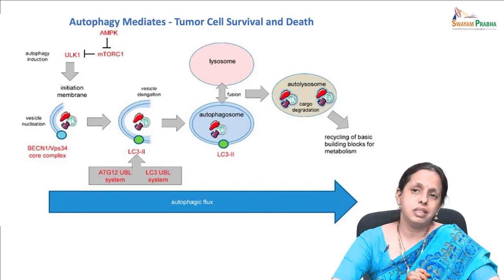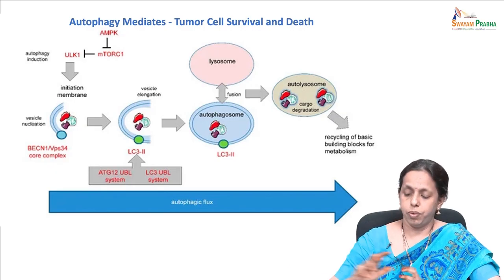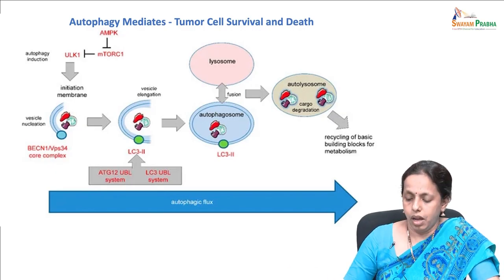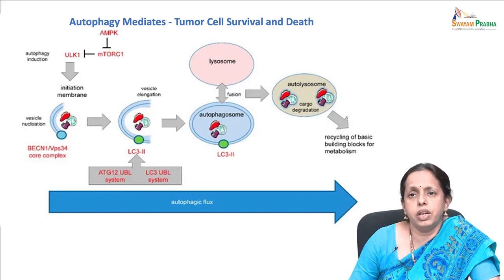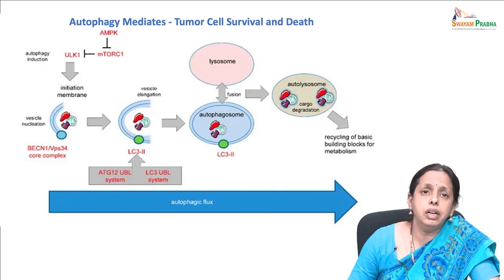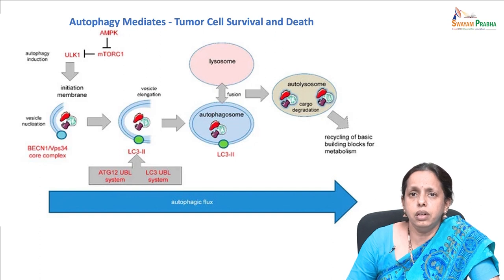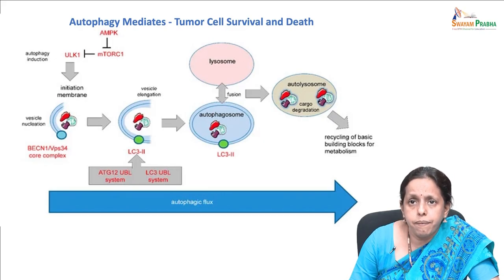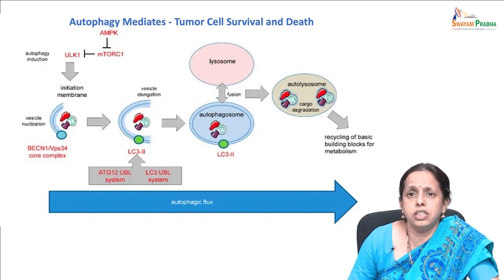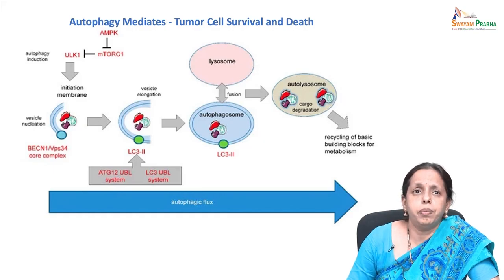Autophagy is a multi-step process involving several ATG proteins and signaling complexes. It requires the formation of a double membrane autophagosome that sequesters proteins, lipids, organelles, and invasive microsomes, and fuses with the lysosome to form an autolysosome. This fusion leads to digestion of content by acidic hydrolases.